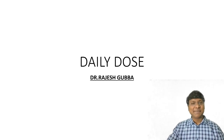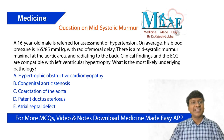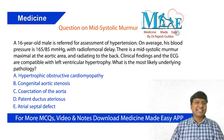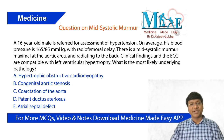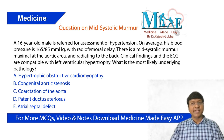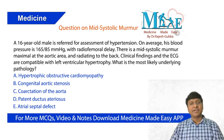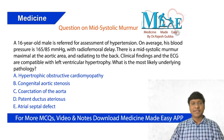As part of today's daily dose, the clinical question is: I have a 16-year-old male referred for the assessment of hypertension. On average, his blood pressure is 165/85 mmHg with radiofemoral delay. There is a mid-systolic murmur maximal at the aortic area radiating to the back. Clinical findings and ECG are compatible with left ventricular hypertrophy. What is the most likely underlying etiology?